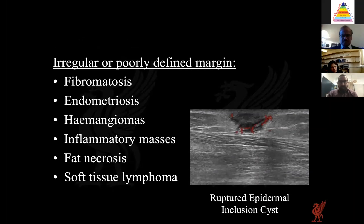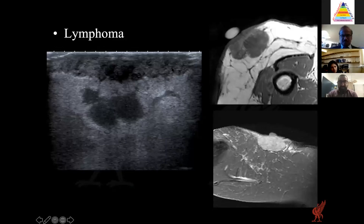An example of a poorly defined malignant lesion is lymphoma. On ultrasound, the actual margins are very hard to see, with different echogenic regions but no clear line around it. Even on MRI, the dermal components are very ill-defined and infiltrative, whereas the deep margin is a bit more well-defined. These were all cases of lymphoma.